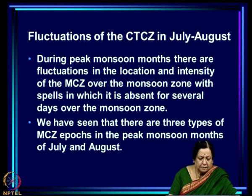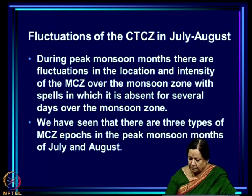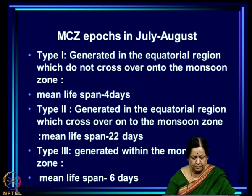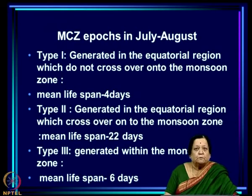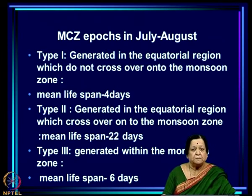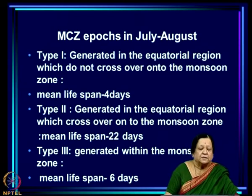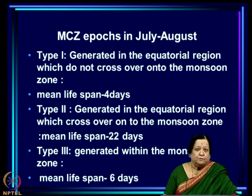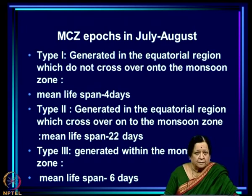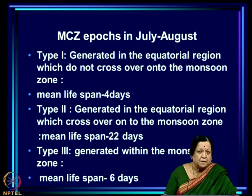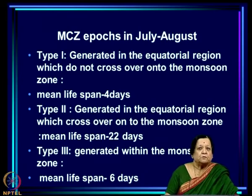During the peak monsoon months of July and August there are three types of MCZ epochs. Type 1 is where the MCZ or maximum cloud zone is generated over the equatorial region but does not cross over onto the monsoon zone — it fluctuates in intensity and then dies. The mean lifespan of such epochs, born and dying over the equatorial Indian Ocean, is only four days.